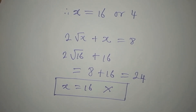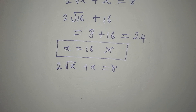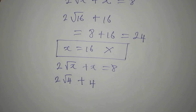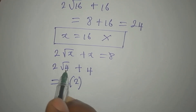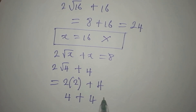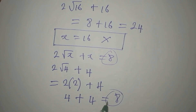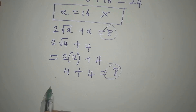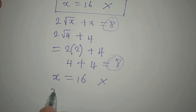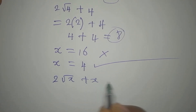Now let's test the second value x = 4. Substituting: 2√4 + 4 = 2(2) + 4 = 4 + 4 = 8. This equals the right-hand side, so x = 4 is verified. Therefore, x = 4 is the only solution to the equation 2√x + x = 8.